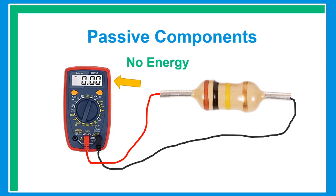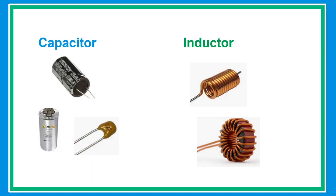A resistor is a passive two-terminal component that limits the flow of current and is used to step up or lower the voltage at different points in a circuit. A capacitor is a device used to store electric charge for a short period of time, consisting of two metallic plates separated by a dielectric.